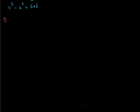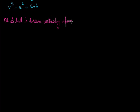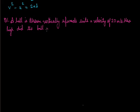Starting with question number one: a ball is thrown vertically upwards with a velocity of 20 meter per second. We have to calculate the height attained by the ball. As given in the question, the ball is thrown upwards with a velocity of 20 meter per second, meaning its initial velocity u is 20 meter per second.